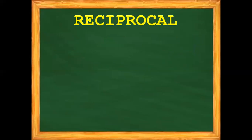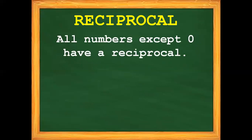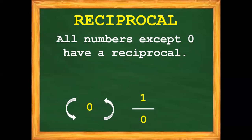Another important note: all numbers except 0 have a reciprocal. So 1 over 0 is not accepted — it is undefined. Therefore, 0 has no reciprocal. Remember that: all numbers except for 0 have a reciprocal.